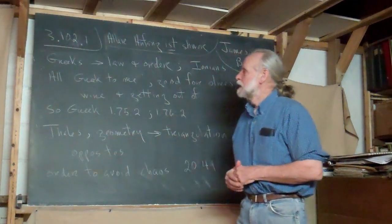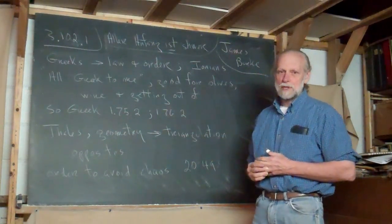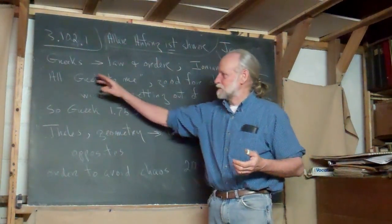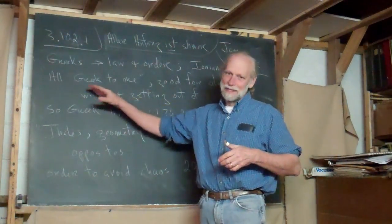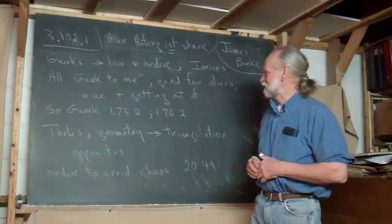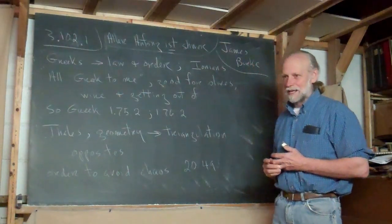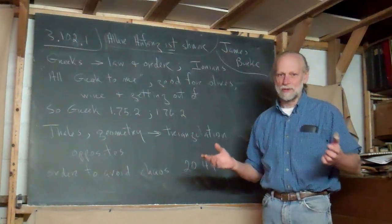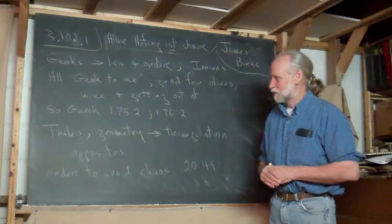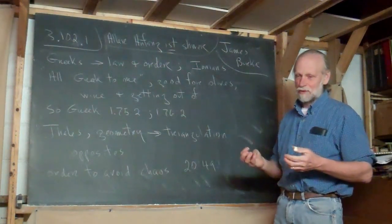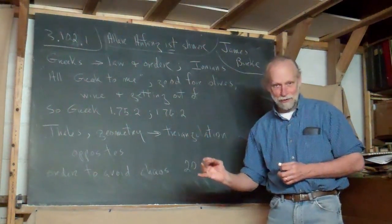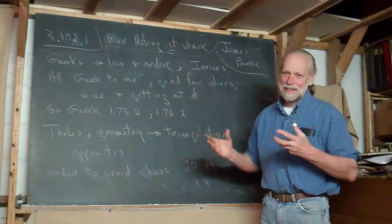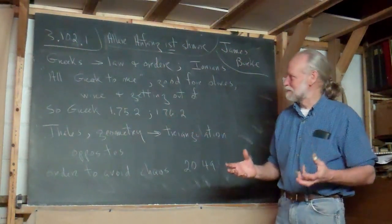A guy named Tales. Well at one point he says it's all Greek to me. Well that's a quote that comes from Shakespeare and of course it's a pun. He's doing this kind of thing all the time. And later on you'll hear him say that these shores that the Ionians came to were good for, I don't know if he says three things, but good for olives, wine, and getting out of.